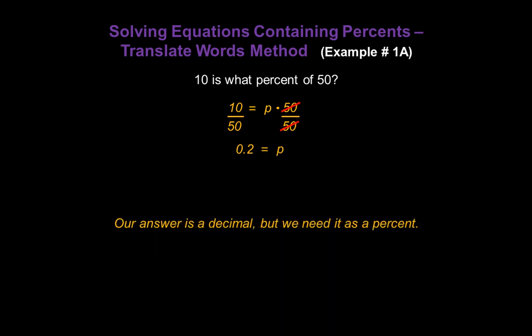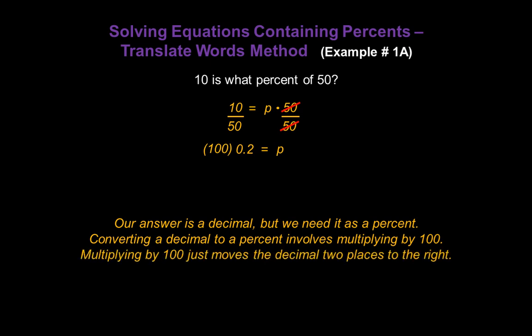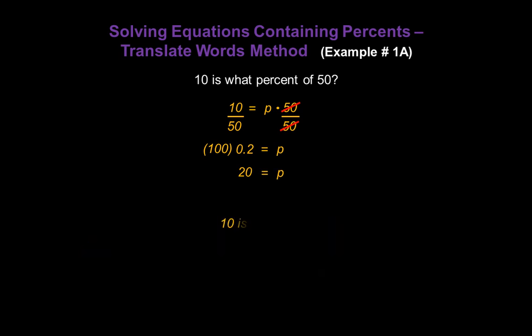That's not our final answer, because our answer is in decimal form and we need it as a percent. Converting a decimal to a percent involves multiplying by 100, so let's multiply 0.2 by 100. Multiplying any number by 100 just moves the decimal point two places to the right. So p equals 20, or 20 percent. In other words, 10 is 20 percent of 50.